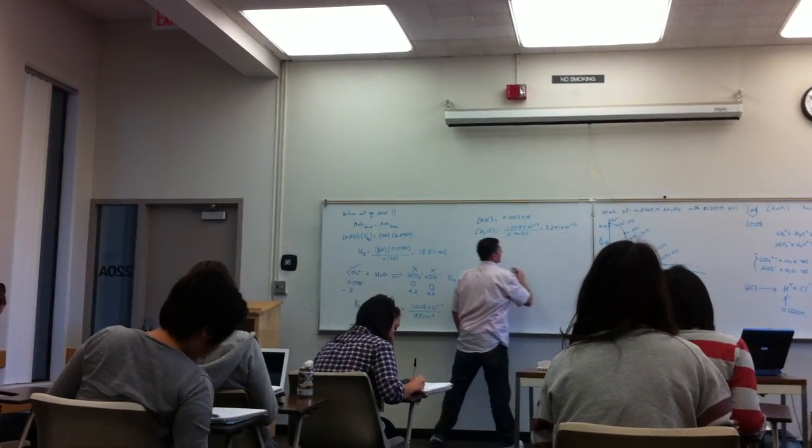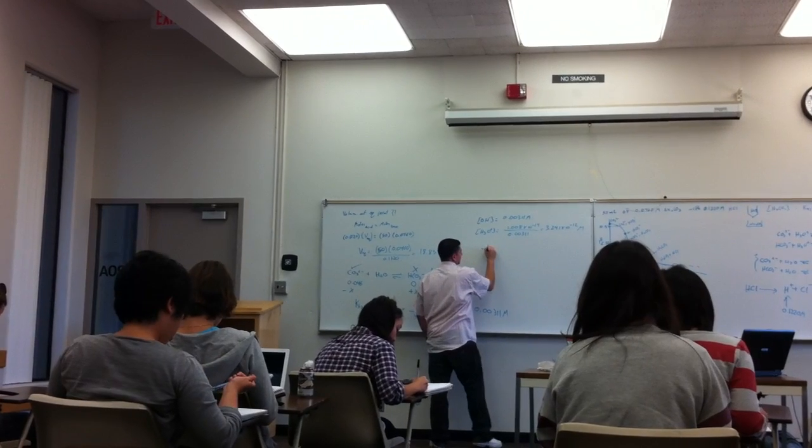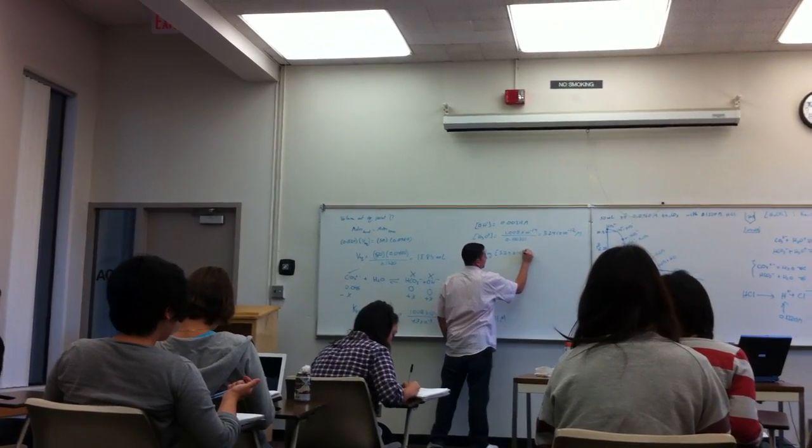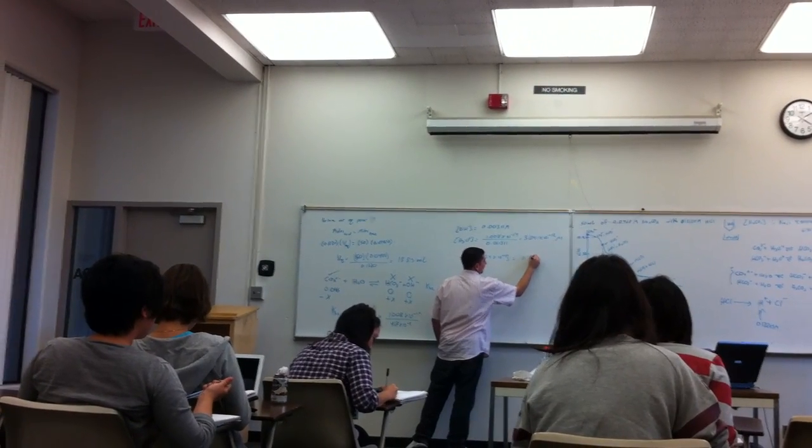3.241 times 10 to the negative 12. Negative 12, and negative log of this will equal to? 11.489. Equals 11.489, 89.